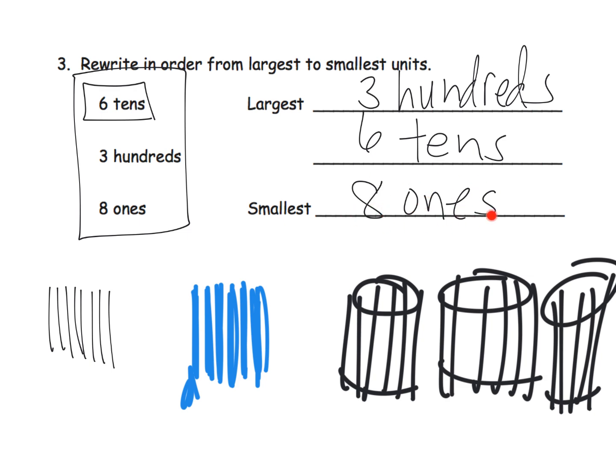So in this eight ones, we're talking about eight ones means eight individual little popsicle sticks. Six tens means we've got bundles of tens, and we have six bundles. So that's 60. And then here, we have bundles of hundreds. Oh my goodness. And then we have three of those bundles. So three hundreds.